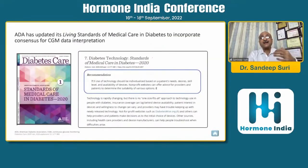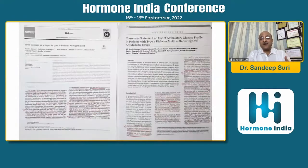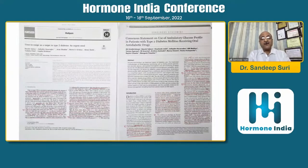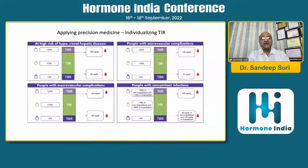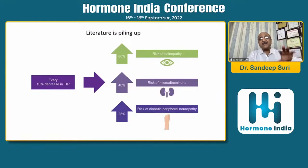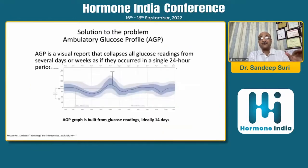This is the appropriate way to present glycemic variability. ADA has updated its living standards of medical care with many trial publications. A multinational panel reported time in range with individualized targets for patients having hypos, microvascular complications, macrovascular complications, and concurrent infarctions. Time in range has been clearly validated: a 10% decrease in time in range leads to 60% increase in retinopathy, 40% increase in microalbuminuria, and 25% increase in diabetic peripheral neuropathy.